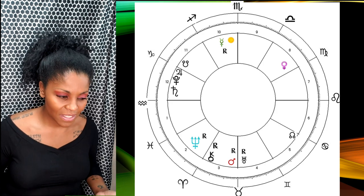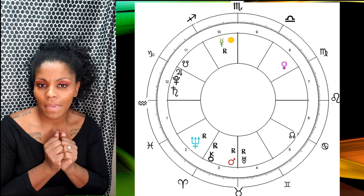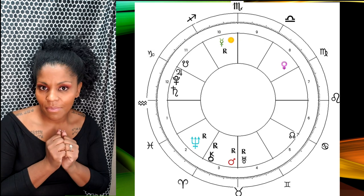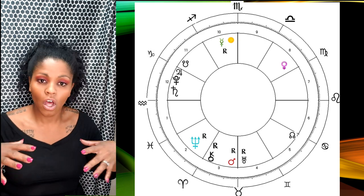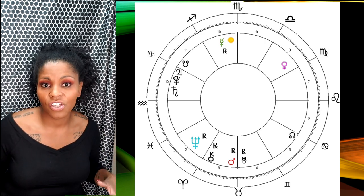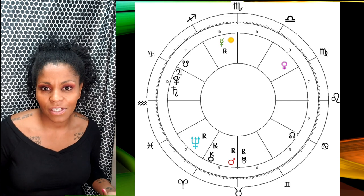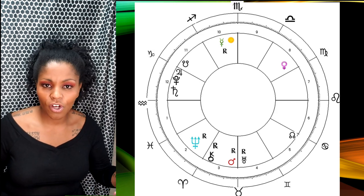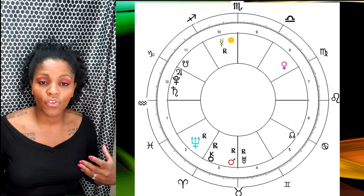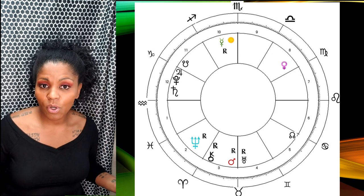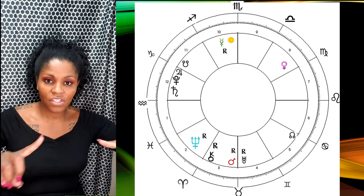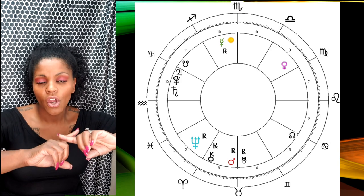On the 24th, Venus is going to trine Saturn, and I wanted to give you this day because I feel like it's a great day to make commitments, right? To make a commitment that has a long-lasting, solid effect in your life. So commit to something pretty serious. You've got Venus up here in Virgo in the eighth house, you've got Saturn over here in Capricorn in the 12th house space. So as these two houses are talking to each other, what are you ready to commit to? The 24th is your day.